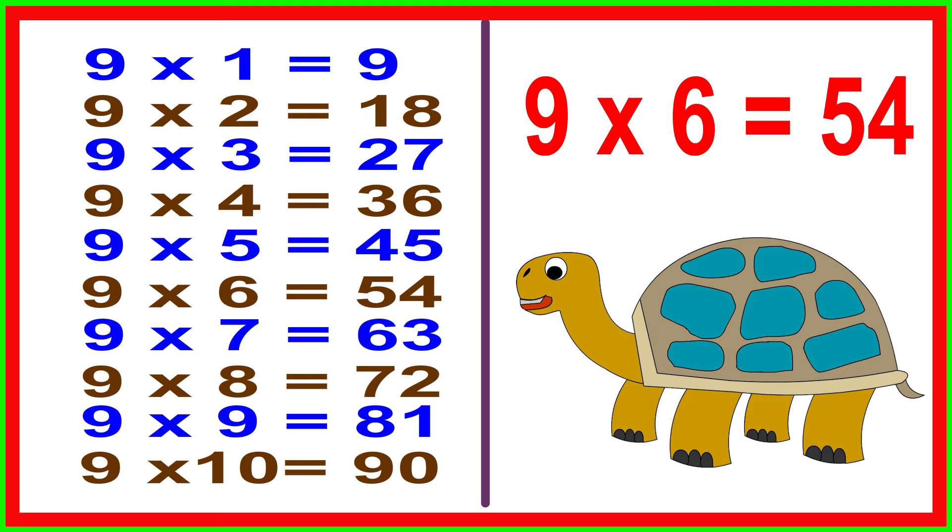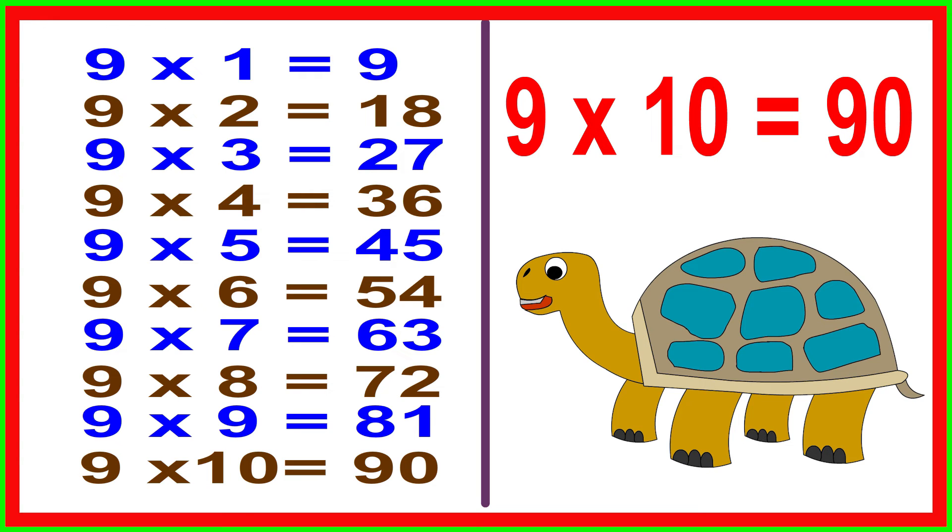9 times 6 equals 54, 9 times 7 equals 63, 9 times 8 equals 72, 9 times 9 equals 81, 9 times 10 equals 90.